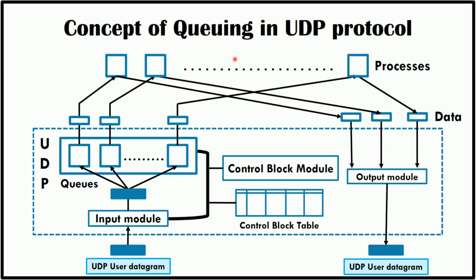UDP handles the sending and receiving of UDP packets with the help of the following components: input module, input queues, control block module, control block table, and output module. The input module receives a user datagram from the IP and searches the control block table to find an entry having the same port as this user datagram. If it is found, the module uses information in the entry to enqueue the data.